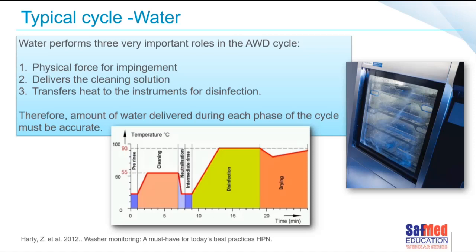If there is too much water, the chemical dilution could be inaccurate — the chemistry could be too diluted, meaning instruments may not clean properly. On the other hand, too little water means the chemistry will be very concentrated, which can leave unseen residuals on instruments and result in poor cleaning. Not enough water also means insufficient force to clean. In some instances the machine will alarm and may even abort the cycle depending on the incoming water pressure. Water pressure is therefore very important when installing washer disinfectors.